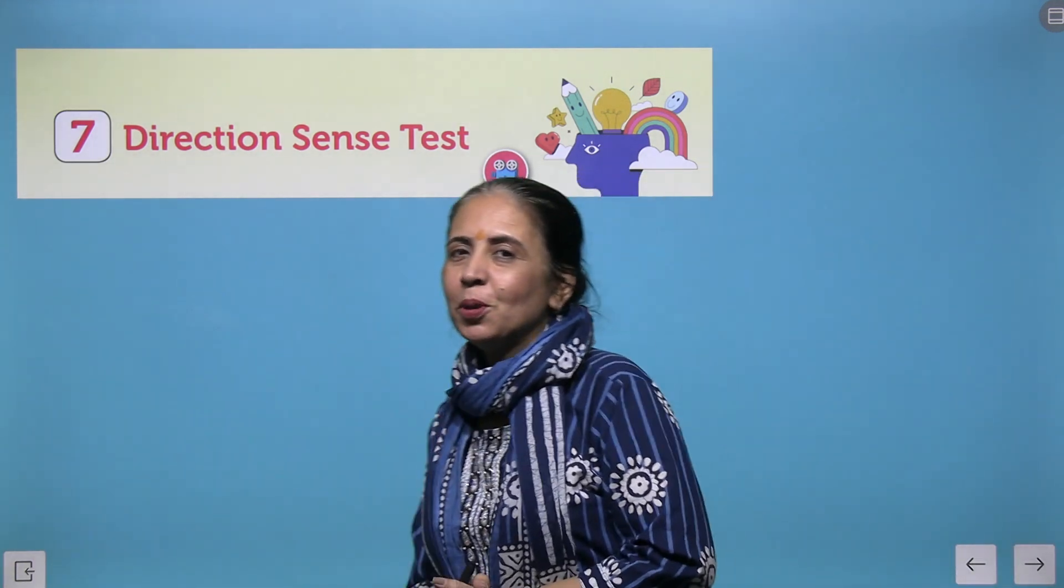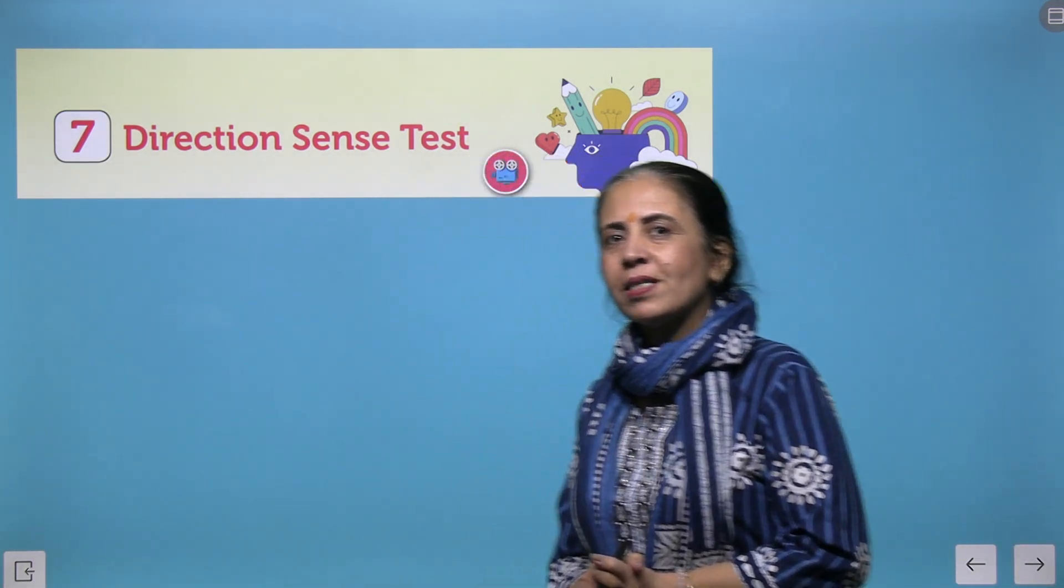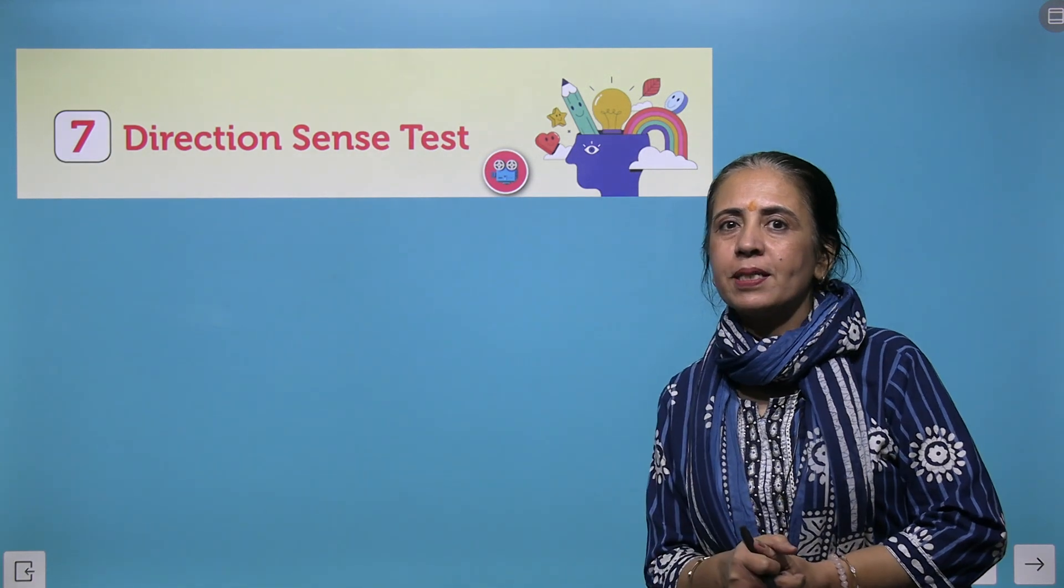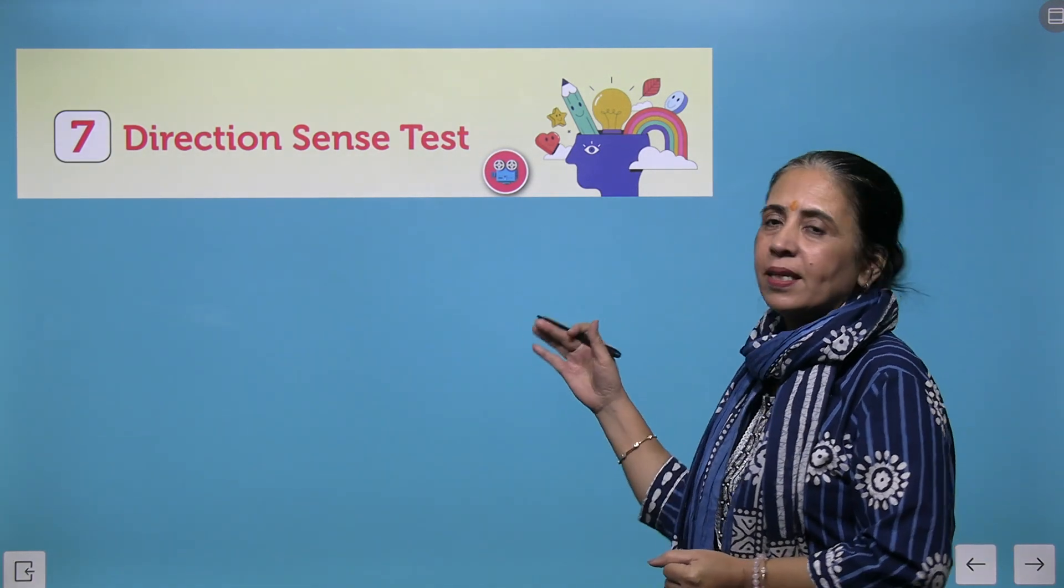Hello genius minds! Welcome to grade 6 aptitude and reasoning book, and this is your chapter number 7: Direction Sense Test.